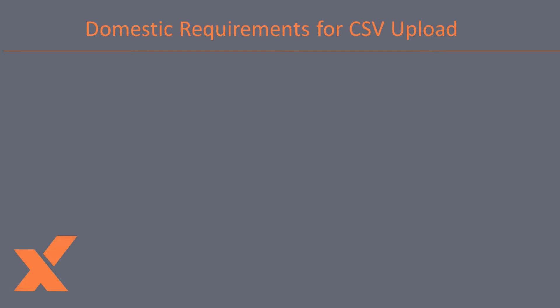The required minimum columns for domestic shipments are: Order ID. This needs to be a unique number not repeated in shipments. Note, if you don't have a column that would work for Order ID, we can tell the system to create generic order IDs when we do our mapping.